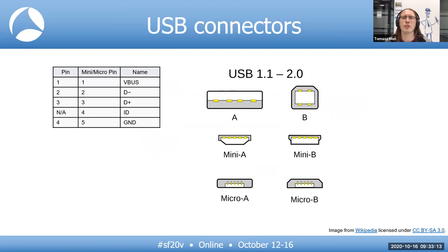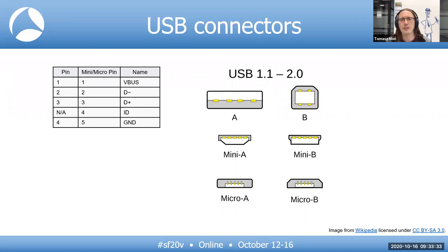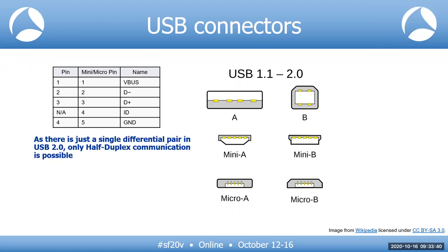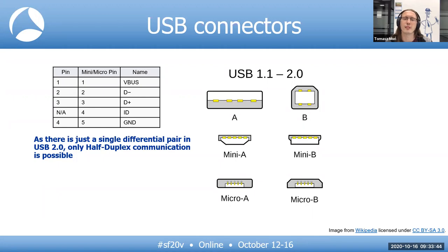When USB was introduced back in 1996, the A and B connectors were used — A at the host side while B is at the device. Initially the connector had only four pins: the 5-volt VBUS, ground, and a single differential pair D-plus and D-minus. As there is just a single differential pair in USB, only half-duplex communication is possible. Being a shared bus, there must be some media access protocol.